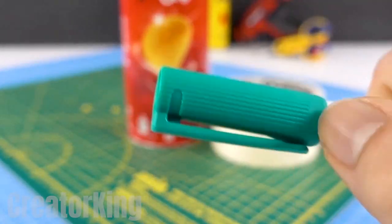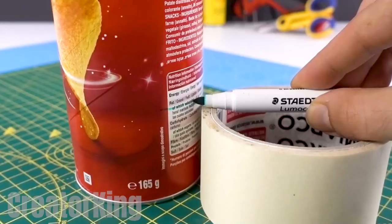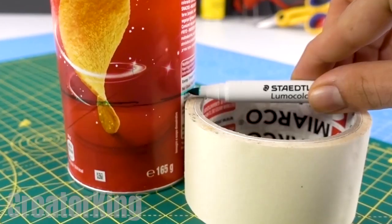We'll take an empty Pringles can, which will act as a supporting item to mark with a pen to help us see where we're going to cut.